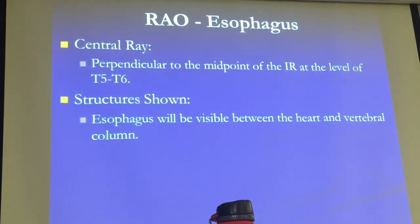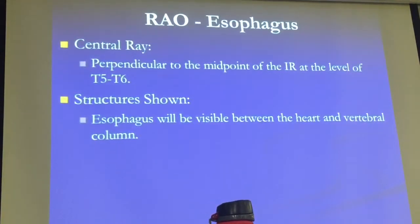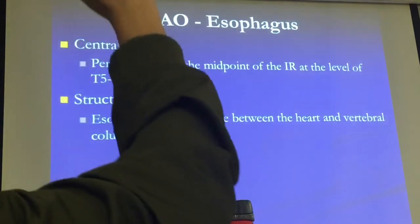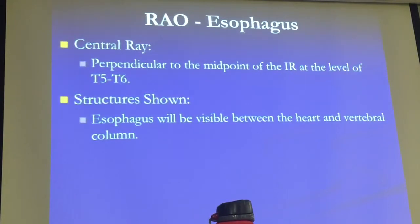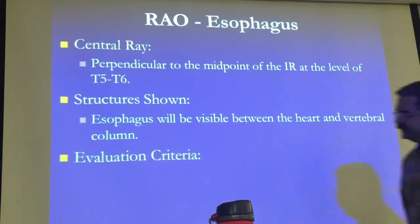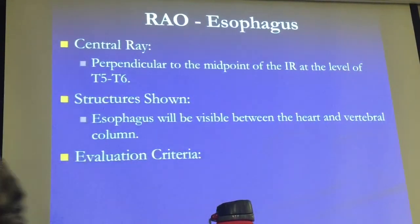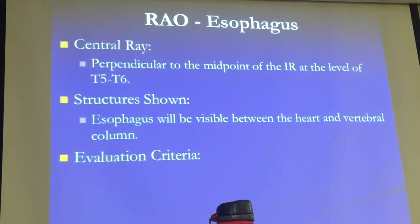How many of you have not seen any fluoroscopy or GI studies? It's quite a few — I knew that. Evaluation criteria: no rotation of the patient. The esophagus from the lower part of the neck to its entrance into the stomach — you need to include the oral pharynx. Most doctors like to see that; a lot of times they'll even bring the fluoroscope all the way up to the head and see the patient swallow from the mouth.